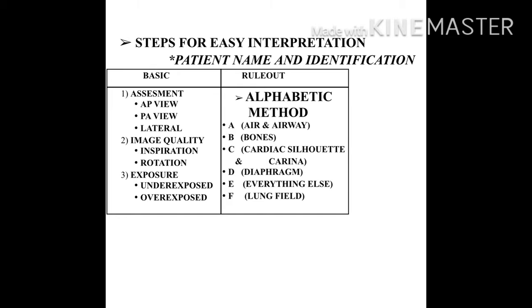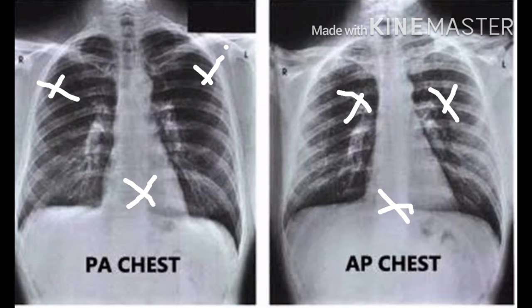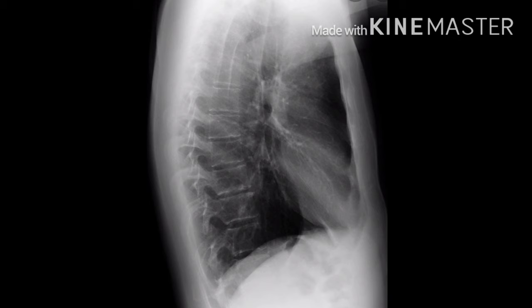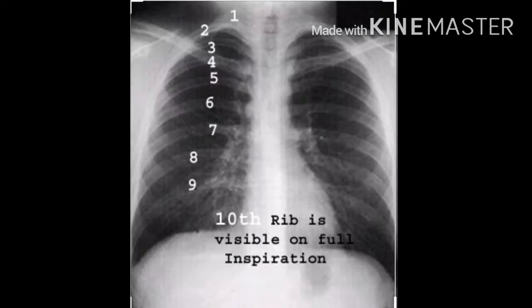To differentiate AP view and PA view: in AP view, the scapular shadow is seen within the lung field, while in PA view the scapular shadow is away from the lung field. Also, in AP view the vertebrae are visible through the heart shadow, whereas in PA view the vertebrae are less dense. The lateral view of a chest x-ray is particularly useful to detect retrosternal and retrocardiac air spaces, and to examine the lungs, bony thoracic cavity, mediastinum, and great vessels.